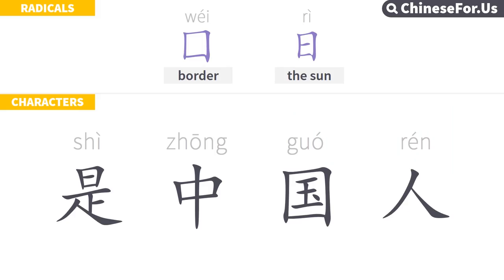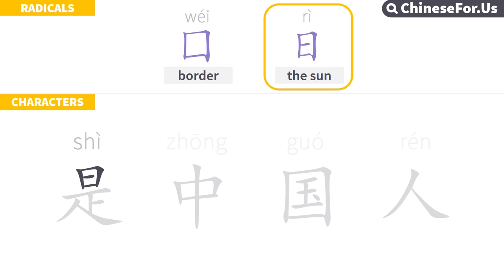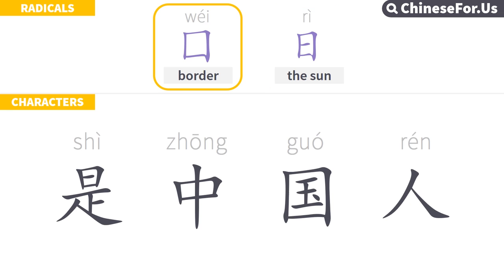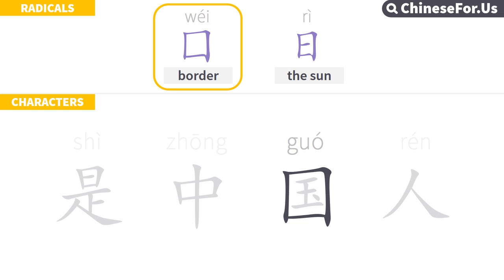Here are the four characters again. Can you find the radical 日, the sun? Here it is, in 是 (shì). And border — in 国 (guó), country. Every country has its border, right?